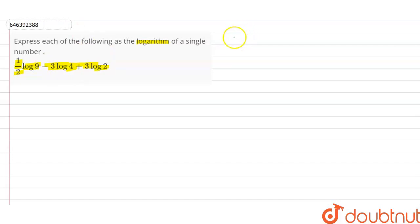For this, we will see our formulas. First of all, a log b. How do we write a log b? Log b to the power a. This a becomes a power of b.